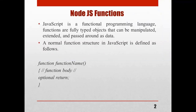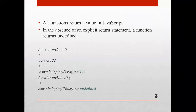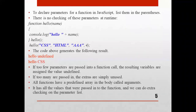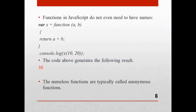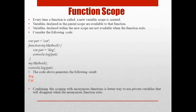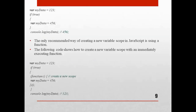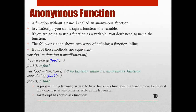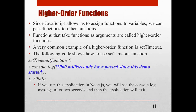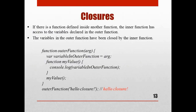We've covered Node.js functions — how to write functions in Node.js, the structure of Node.js functions, named functions and anonymous functions with examples, how to execute a function without a name, the scope of functions, and higher-order functions. Now we are going to continue with closures.